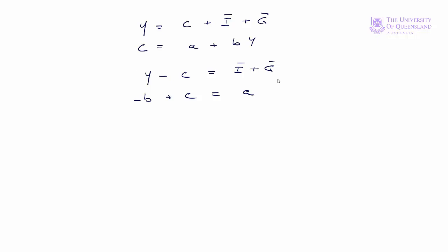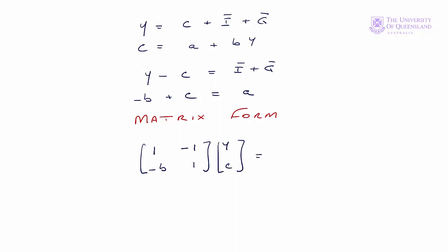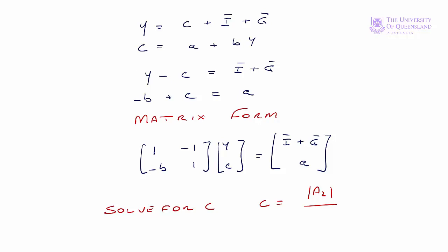Now we get the equations into matrix form. The coefficients for the first equation are 1 and minus 1, and for the second equation minus b and plus 1 — that's the matrix of coefficients. We have y and c as our variables, and on the right-hand side the constants i plus g and a. We solve for C using Cramer's rule: C is equal to the determinant of the A matrix with the second column replaced, divided by the determinant of A.